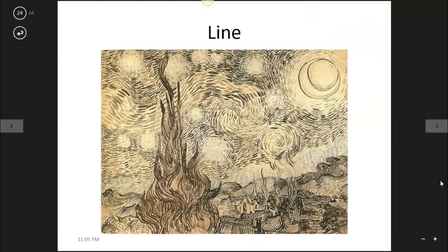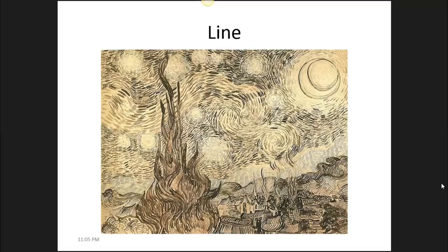This is Starry Night by Van Gogh. Van Gogh was an avid pen and ink drawer and he sketched constantly. What is really interesting about this drawing is that he draws the same way he paints, in these little broken lines that lead the eye around the image. So if you look at the sky, you actually go on a visual journey as you follow the broken lines from left to right and then swirling around and then back again.